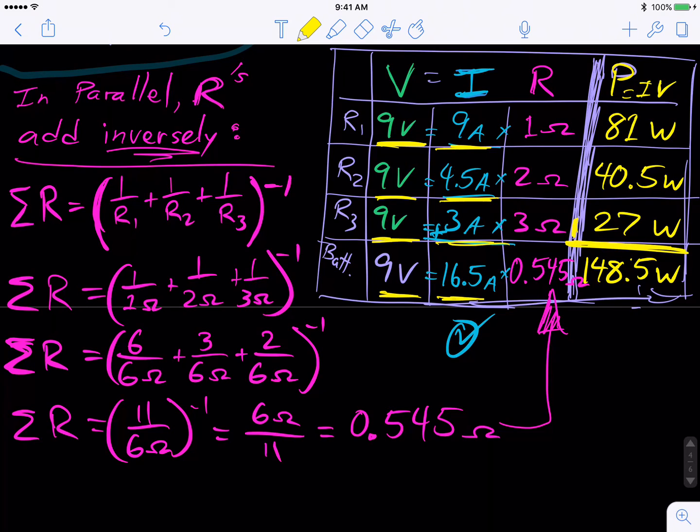Now the cool thing about power is that power is an amount of energy being used or transferred or transitioned every second. 81 watts of joules every second is 81 joules every second. So 81 plus 40.5 plus 27 - those are amounts of energy. We're just adding the amounts. We should be able to add those to 148.5. And if you put it in your calculator, they do add up to 148.5. So we've just found two ways to verify that we did our VIRP chart correctly.